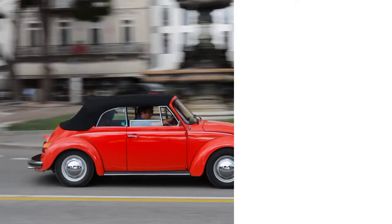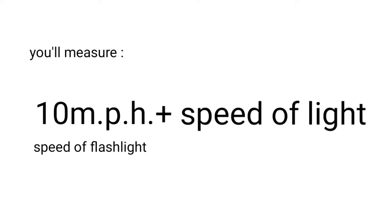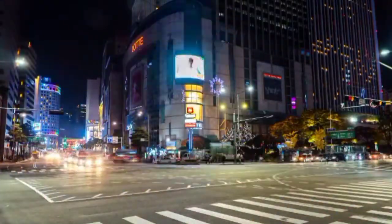But what if instead of throwing a ball, I decided to switch on a flashlight in this direction instead? What would you measure the speed of the light from the flashlight to be? 10 miles per hour plus whatever the speed of light is? No, light doesn't work this way. No matter what my car's speed was, whether it's 10 miles per hour or 50 miles per hour, you would always measure the speed of light to be the same.